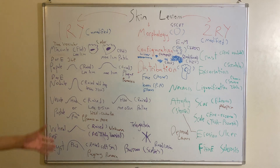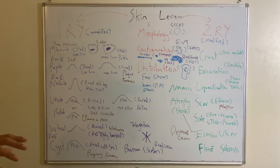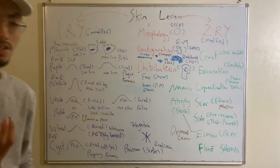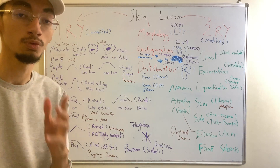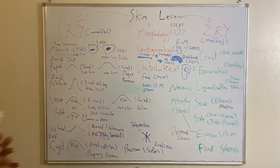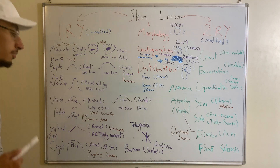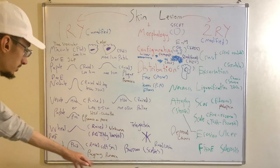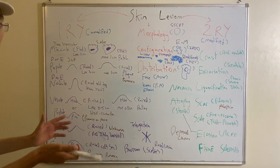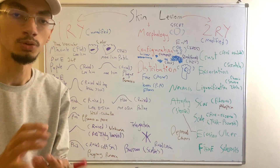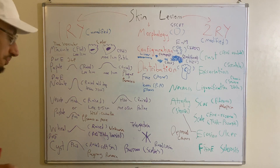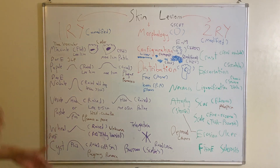Another raised lesion is a cyst. A cyst can be within the epidermal or dermal layer. It is a raised, soft sac that is easy to distinguish from a vesicle — it is soft and filled with fluid. Cysts can be seen in pregnancy or in skin conditions such as rosacea.